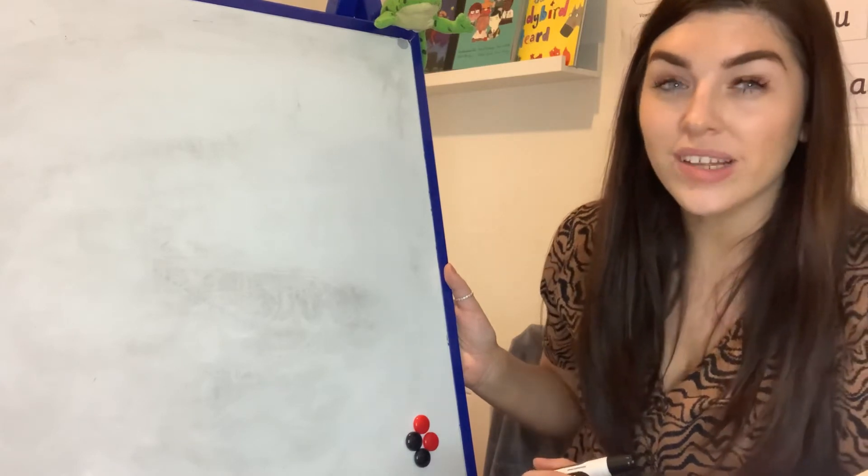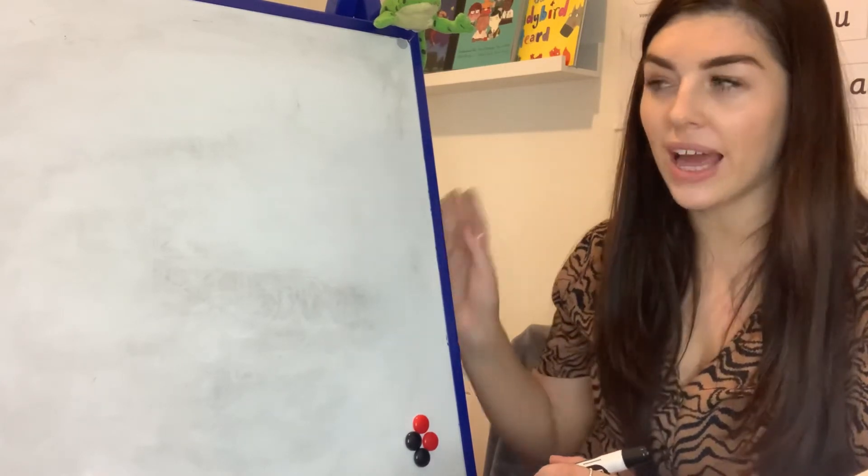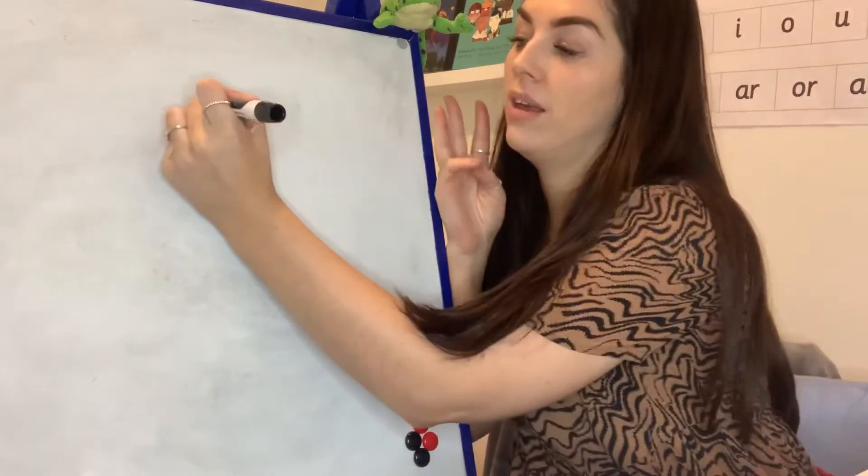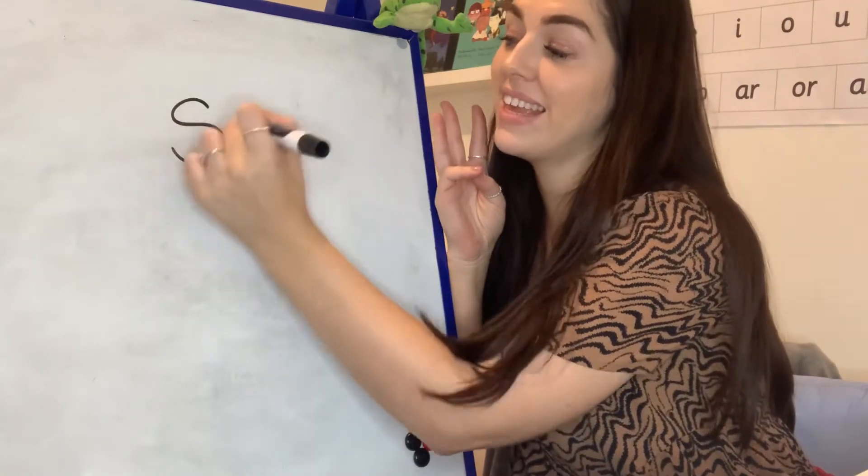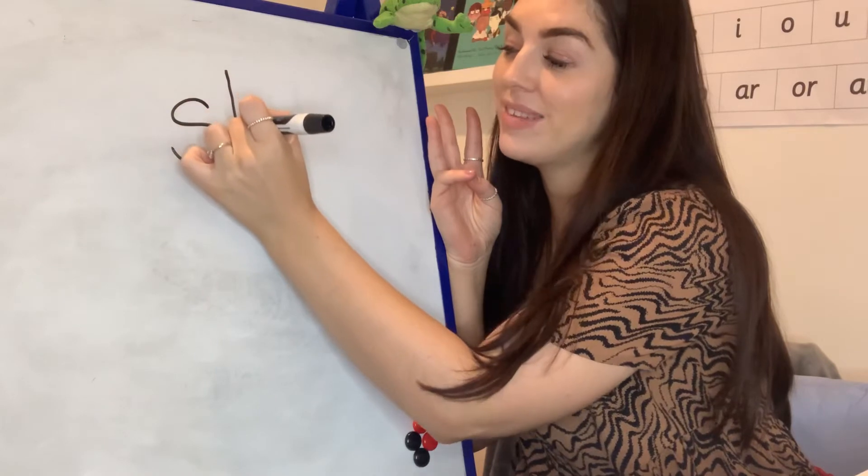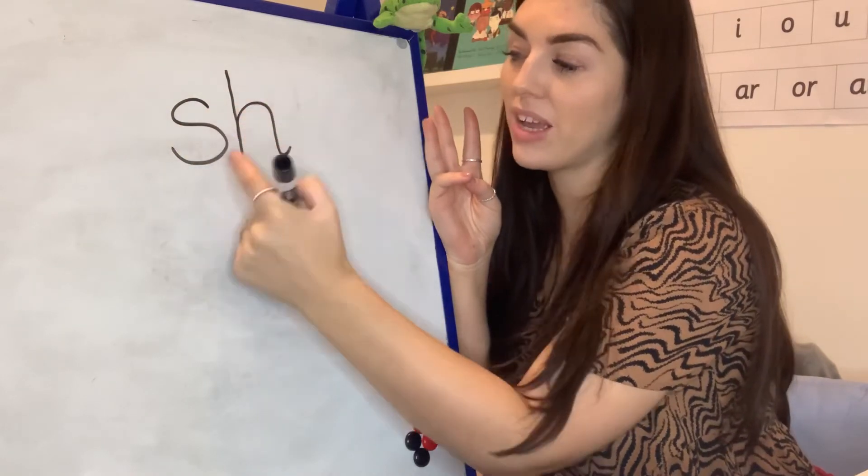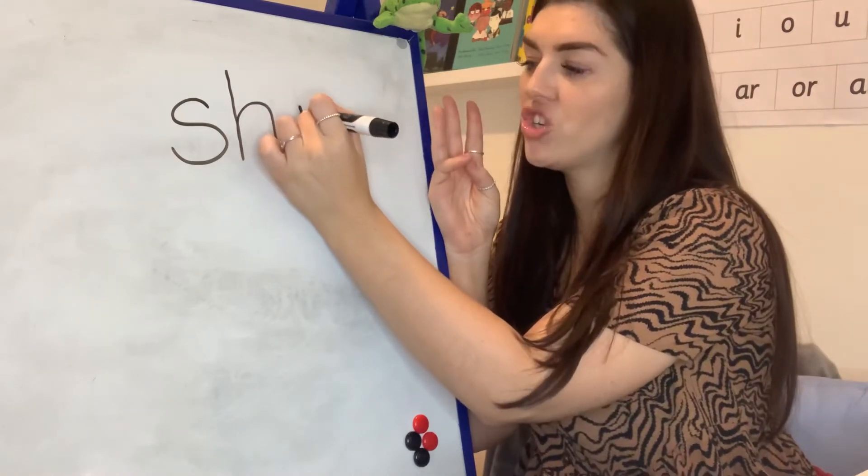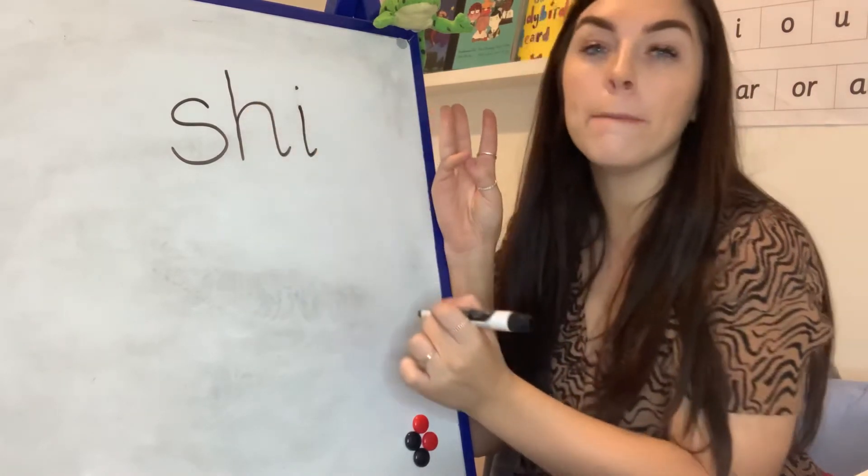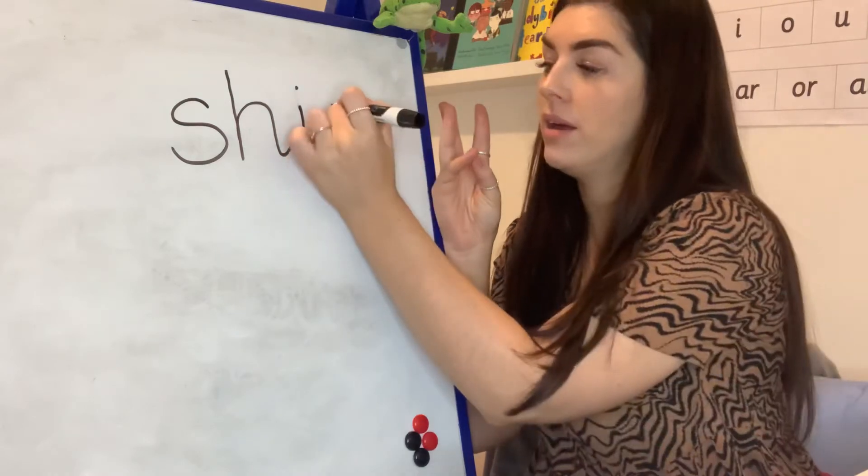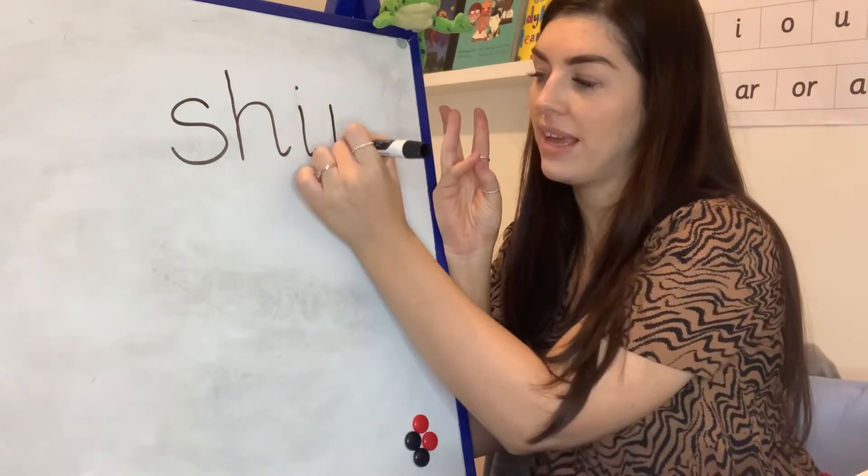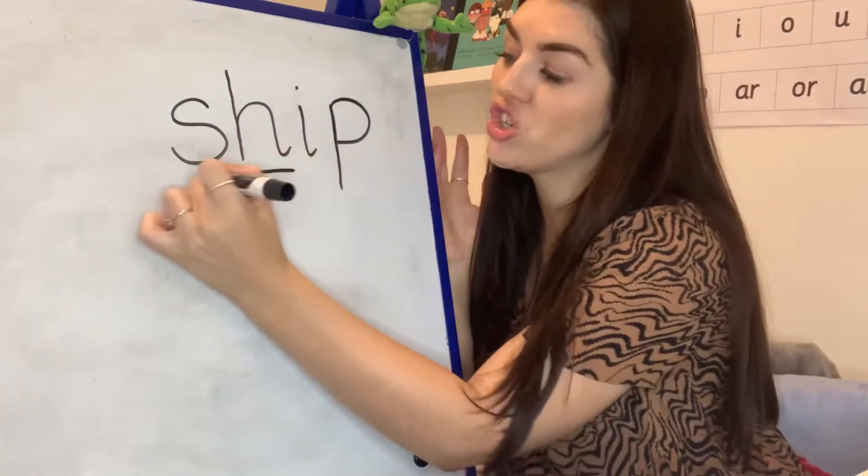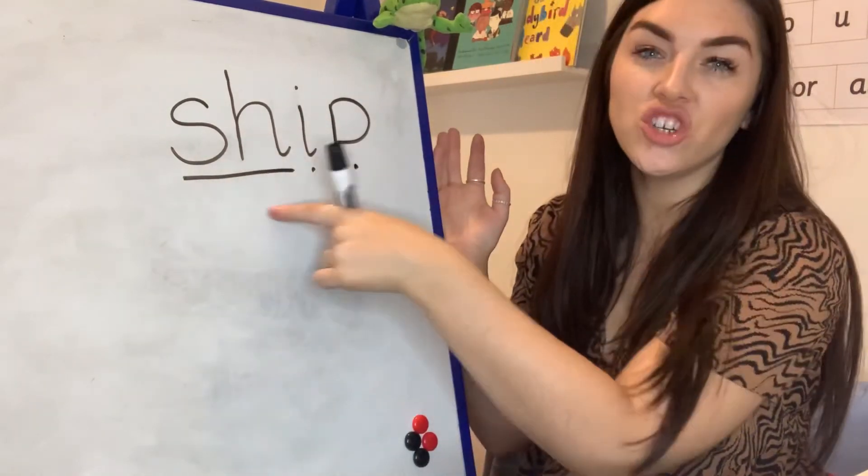Let's see what ship should look like. First sound. Sh. Slither down the snake. Down his head to his hooves and over his back. Sh. Second sound. I. Sh. I. P. Down his pants. Round his face. Sh. I. P. Ship.